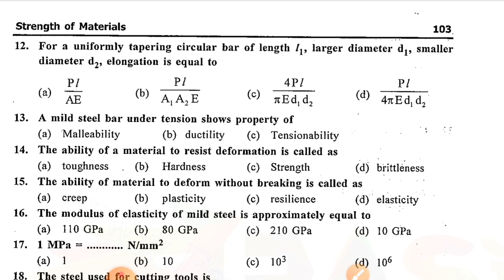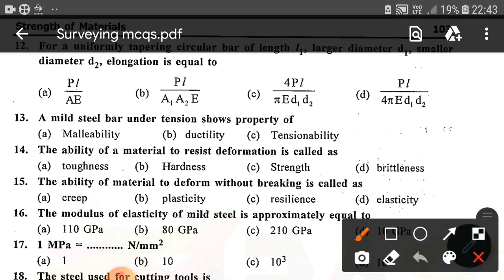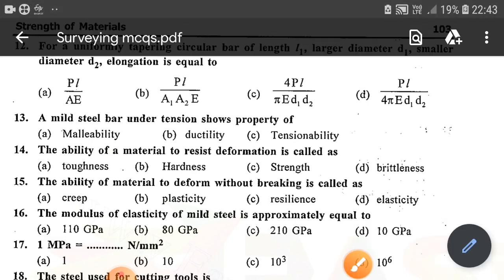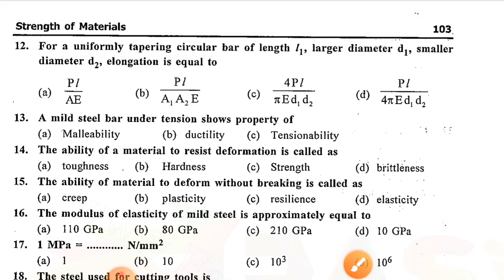Question number twelve: For a uniformly tapering circular bar of length L, large diameter D1, small diameter D2, elongation is equal to — option C is correct — 4PL divided by (π·E·D1·D2). Question number thirteen: A mild steel bar under tension shows the property of — option B is correct — ductility.